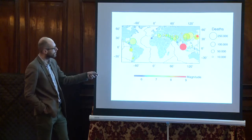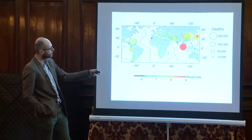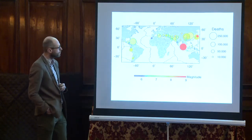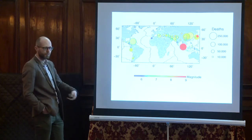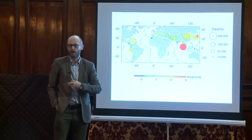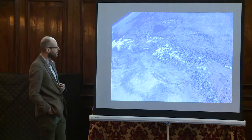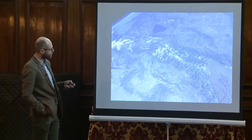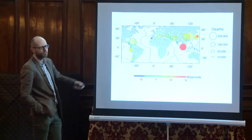Looking at a map of earthquakes where the size of the circles represents how destructive an earthquake has been, and the colour representing the size of the earthquake, most of the very large destructive events have been within the interior of Asia. Notice also that a lot of these are greens and yellows — they're not particularly large earthquakes, but they do have a very large effect in terms of societal hazard.